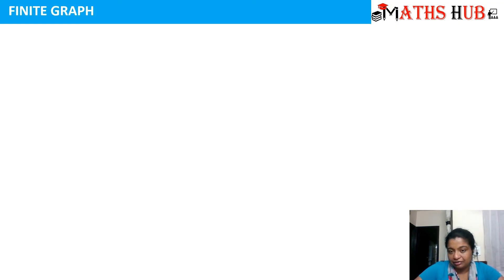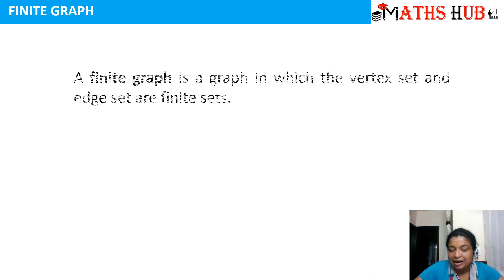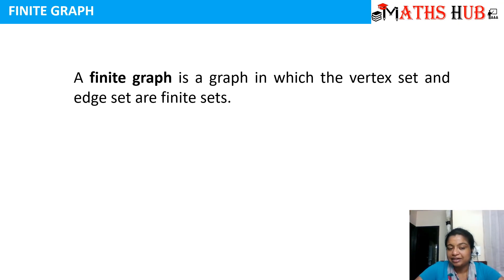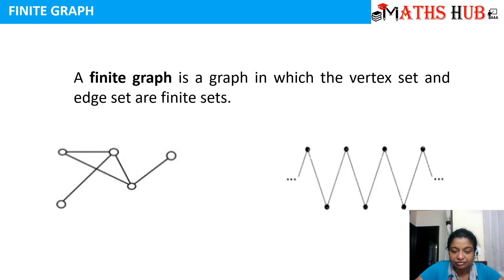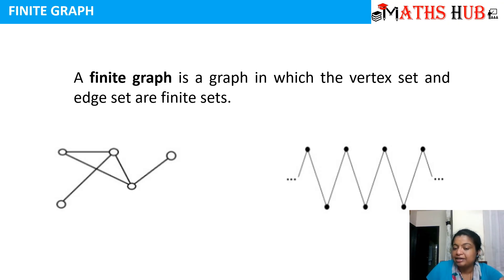Next, finite graphs. Any graph which contains a finite set of vertices and edges is called a finite graph. So if you can count the number of vertices and the number of edges, it is a finite graph. On the other hand, the three dots on both ends of a graph represent that it can be extended in any direction — you cannot count the number of vertices or edges in that case, so that is an example of an infinite graph.